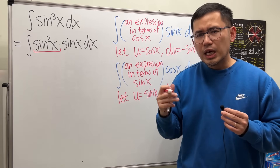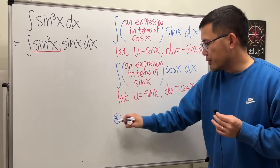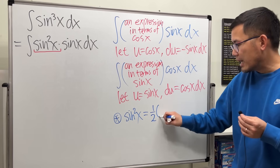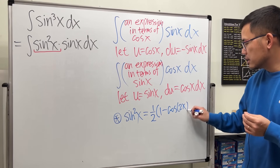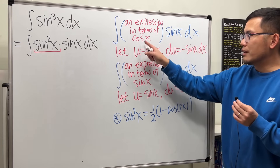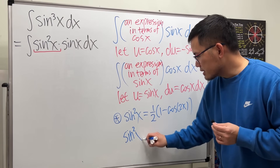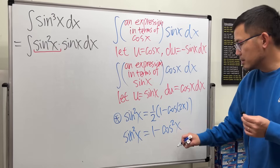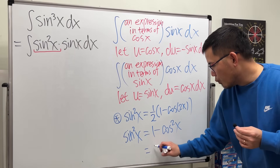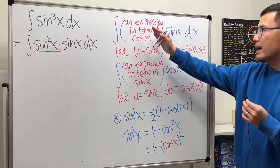Now we wish to have the remaining expression in terms of cosine x. We have two choices: sine squared x can be written as one half times one minus cosine 2x — the half-angle identity — but that gives cosine 2x, not cosine x. So instead we use the Pythagorean identity: sine squared x equals one minus cosine squared x. This gives us an expression in terms of cosine x.